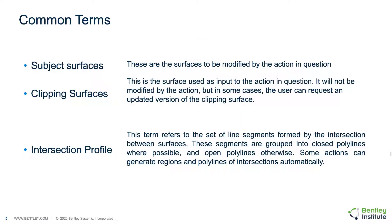There are a number of common terms related to intersecting surfaces that the user should be familiar with. Subject surface refers to the surface to be modified by the action in question. Clipping surface refers to the surface used as input to the action. Clipping surfaces will not be modified by the action, but the user can request an updated version. An action profile is the set of line segments formed by the intersection between surfaces, grouped into closed or open polylines. Some actions generate regions and polylines of intersections automatically.